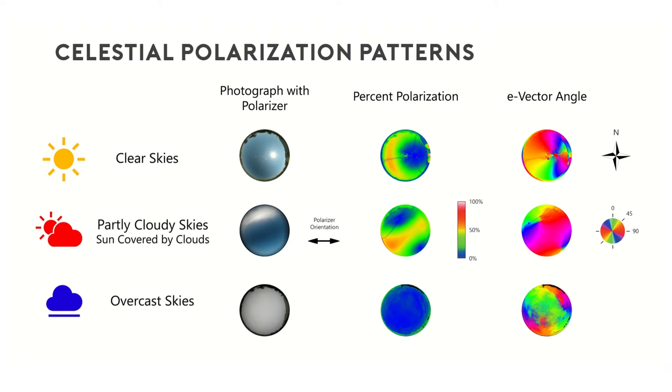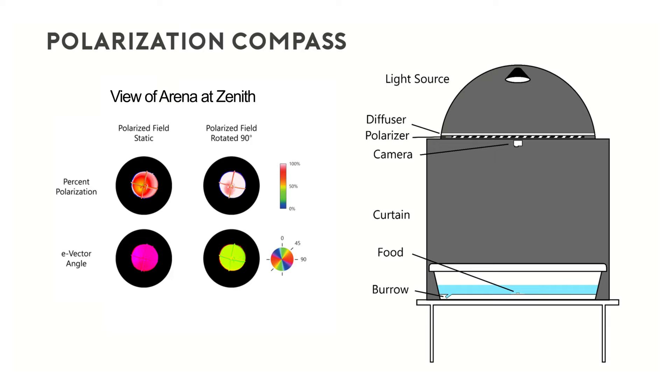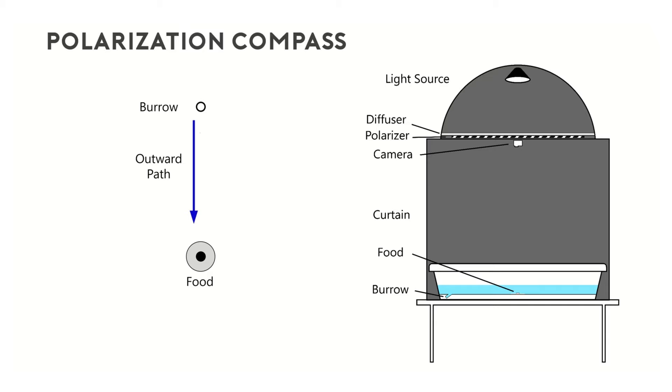We hypothesized that they were using celestial polarization patterns caused by the scattering of sunlight in the Earth's atmosphere under these conditions. To test this hypothesis, I built indoor arenas that were carefully designed to create a homogeneous environment with an artificial polarized light pattern displayed over the arena. When animals found food placed in the center of the arena, the polarization pattern was rotated 90 degrees.